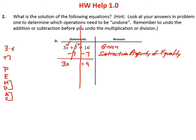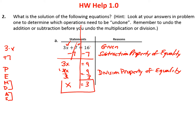Now we've undone the plus 7, so we need to undo the 3 times x. The opposite of multiplying by 3 is dividing by 3. So if I divide this side by 3, I've got to do it to the other side too — that's the division property of equality. It states that if two expressions are equal and you divide both sides by the same number, the result will also be equal. We divide by 3 because 3 divided by 3 is 1, leaving us with just x. And 9 divided by 3 is 3. So x equals 3.